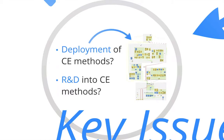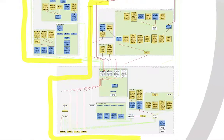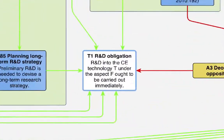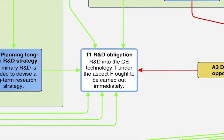The deployment question is discussed in the upper part of the argument map, whereas the R&D issue is considered by arguments in the lower part. Each of these parts contains at least one central claim. Note that the green arrows indicate support relations between these arguments, and that the red arrows indicate attack relations.